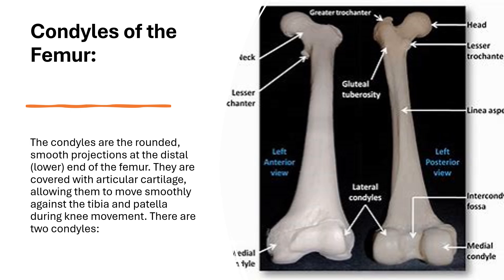The condyles are the rounded, smooth projections at the distal, so the lower end of the femur. They're covered with articular cartilage, allowing them to move smoothly against the tibia and patella during knee movement.